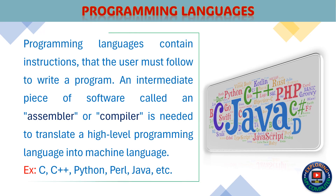Programming languages contain instructions that the user must follow to write a program. An intermediate piece of software called an assembler or compiler is needed to translate a high-level programming language into machine language. Examples include C, C++, Python, Perl, Java, etc.